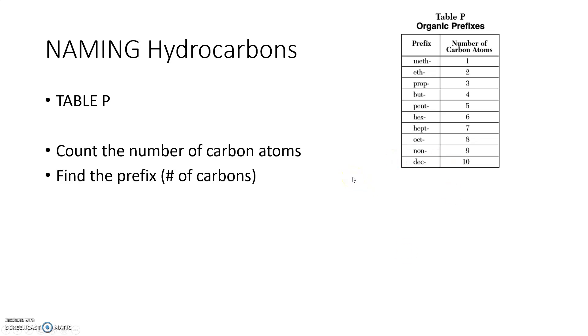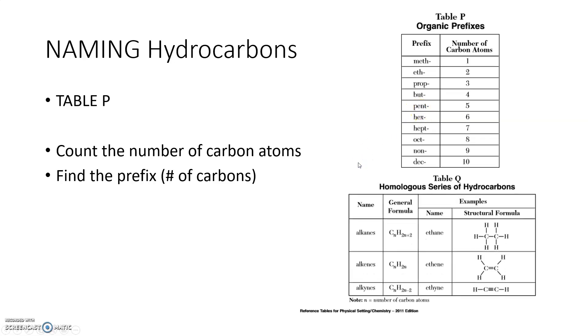So if I have a substance and I'm looking at it and I realize it's a hydrocarbon, I can count the number of carbons. If there were five carbons, I know that my prefix is going to be pent. The next thing we want to take a look at is table Q.